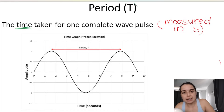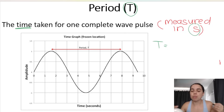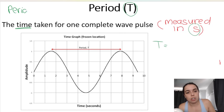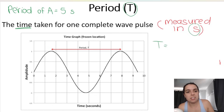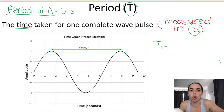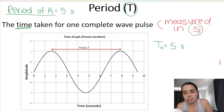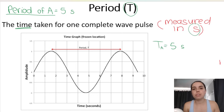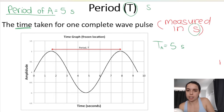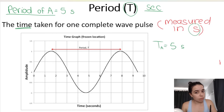Just to clarify: there's a difference between a symbol and a unit of measurement. The symbol is T — a symbol is just another way of writing 'period'. So instead of writing 'the period of wave A is five seconds', we write T = 5 s. The unit is seconds. An important side note: you cannot write 'sec' in matric — we will mark you down. You can write 's', 'seconds', or the full word. So period is the time taken for one complete wave pulse.